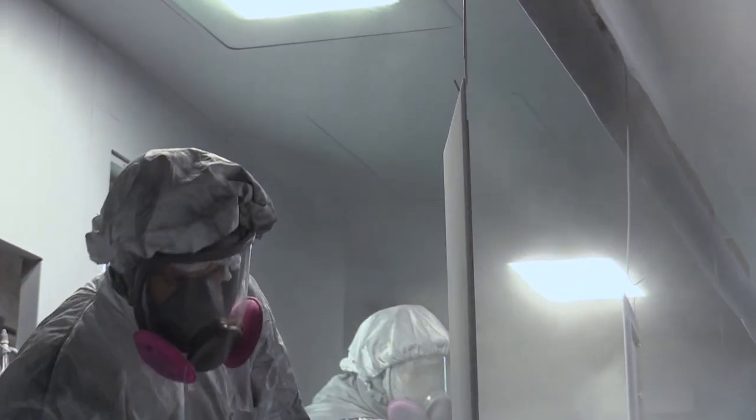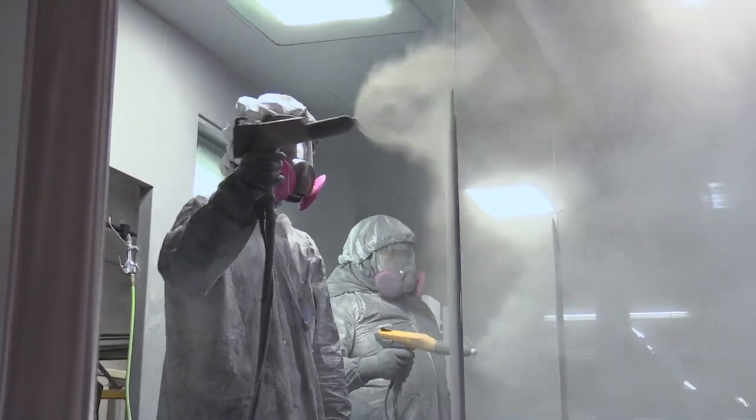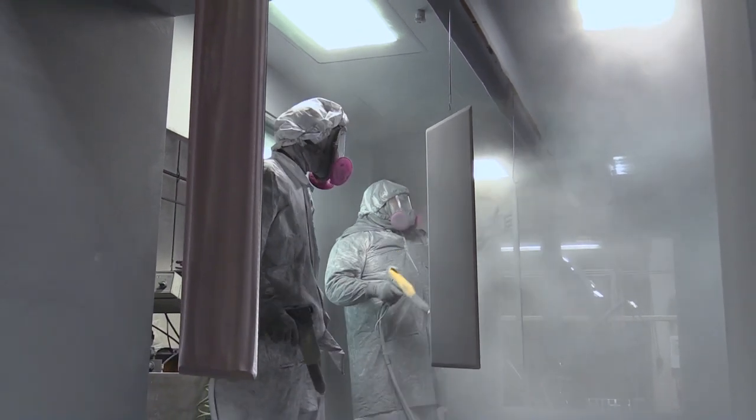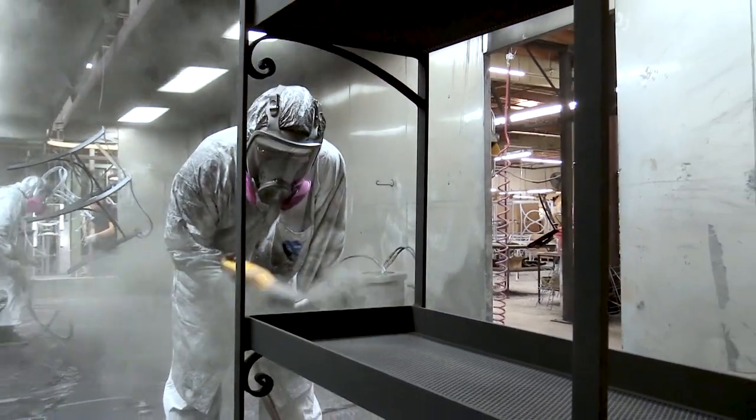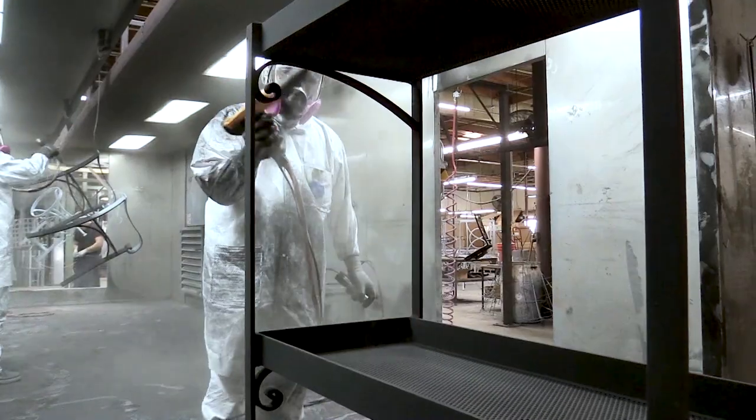A hand-applied zinc-rich epoxy primer is used to create a protective undercoat that inhibits oxidation and helps protect the final finish. The top coating of durable high-transfer-efficiency powder is also hand-applied and then oven-cured to ensure a long-lasting finish.